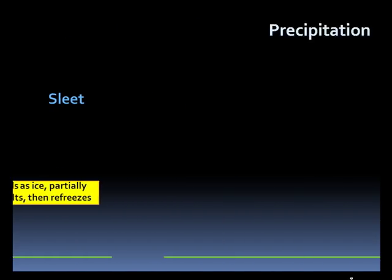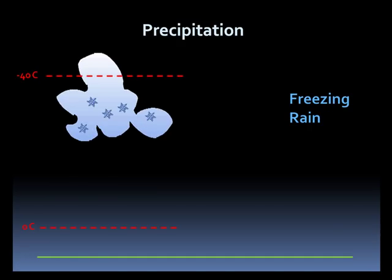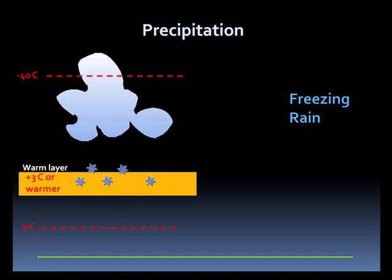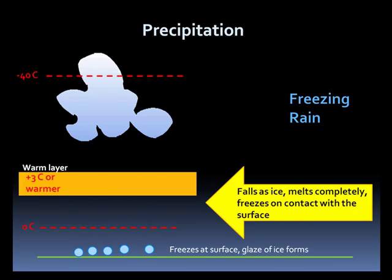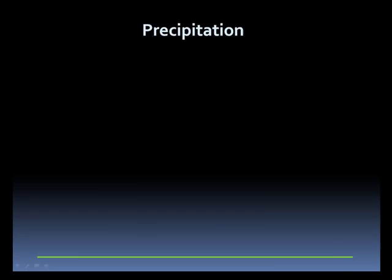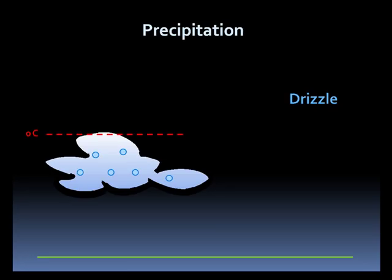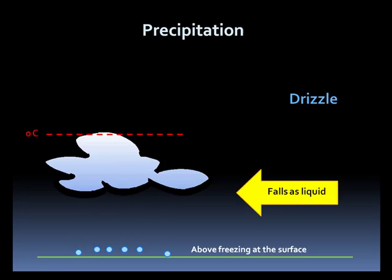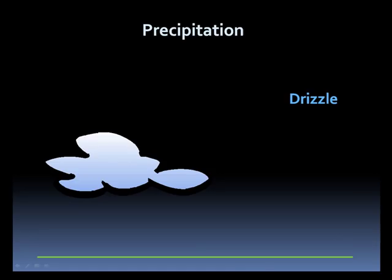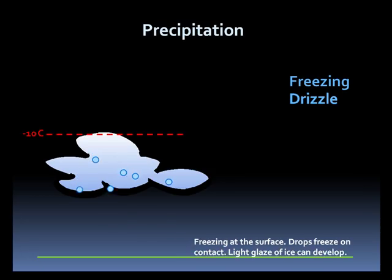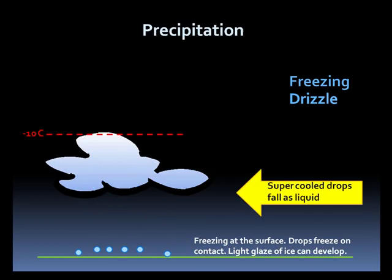Freezing rain is very similar to sleet, falling as ice crystals into a warm layer. However, this warm layer is 3 degrees Celsius or greater, which results in complete melting. Now rain, they fall to the surface where it is below freezing. Thus the liquid freezes on contact, resulting in freezing rain. Drizzle generally develops on the low-hanging stratus cloud, and it is an all-liquid process. The droplets get big enough and heavy enough to fall, but are much smaller than raindrops and can resemble mist. Freezing drizzle is just like drizzle, except the temperatures at the surface are at freezing or colder. Super-cooled water droplets fall to the surface, freezing on contact.